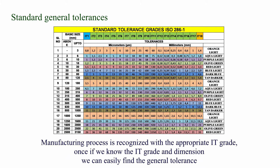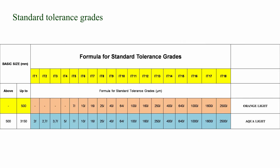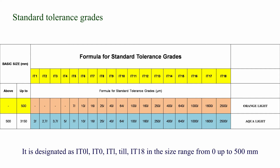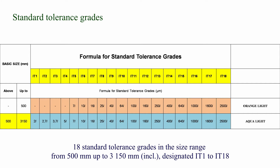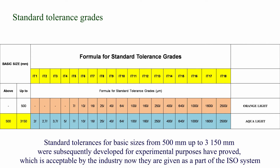Manufacturing process is recognized with the appropriate IT grade. Once we know the IT grade and dimension, we can easily find the general tolerance. Standard tolerance grades are designated IT01, IT0, and IT1 through IT18 in the size range from 0 up to 500 mm. IT0 and IT1 are not given in the main body of the standard because they have little use in practice. There are 18 standard tolerance grades in the size range from 500 mm up to 3150 mm, designated IT1 to IT18. Standard tolerances for basic sizes from 500 mm up to 3150 mm were subsequently developed for experimental purposes and have proved acceptable by the industry, and are now given as part of the ISO system.